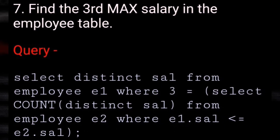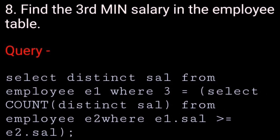Find the third max salary in the employee table. SELECT DISTINCT salary FROM employee E1 WHERE 3 = (SELECT COUNT(DISTINCT salary) FROM employee E2 WHERE E1.salary <= E2.salary). Find the third minimum salary in the employee table.